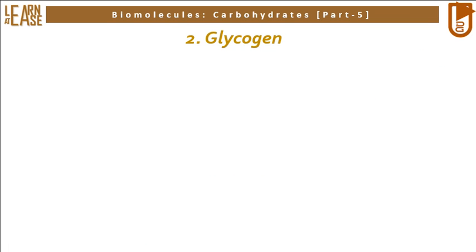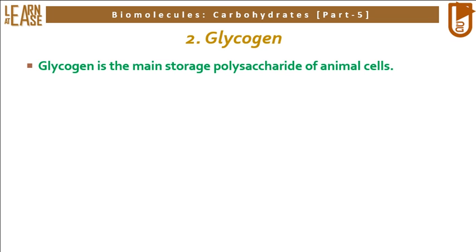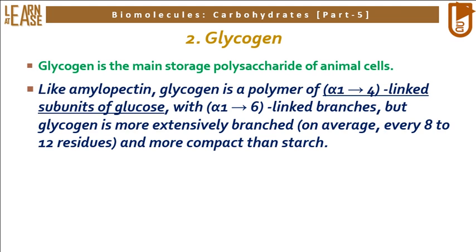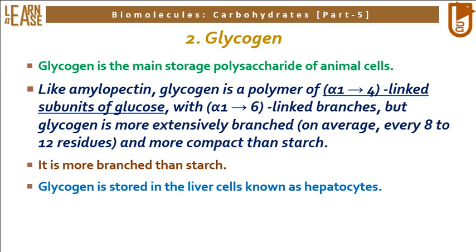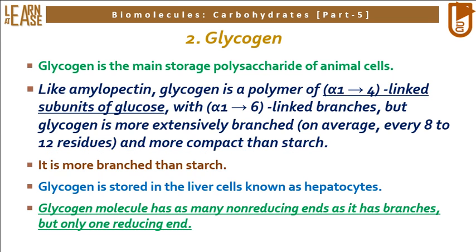The second example of homopolysaccharide is glycogen. Glycogen is the main storage polysaccharide of animal cells. Like amylopectin, glycogen is a polymer of alpha-1-4-linked subunits of glucose with alpha-1-6-linked branches, but glycogen is more extensively branched. On average, branching occurs after every 8–12 residues, making it more compact and more branched than starch. Glycogen is stored in liver cells known as hepatocytes. A glycogen molecule has as many non-reducing ends as it has branches, but only one reducing end.